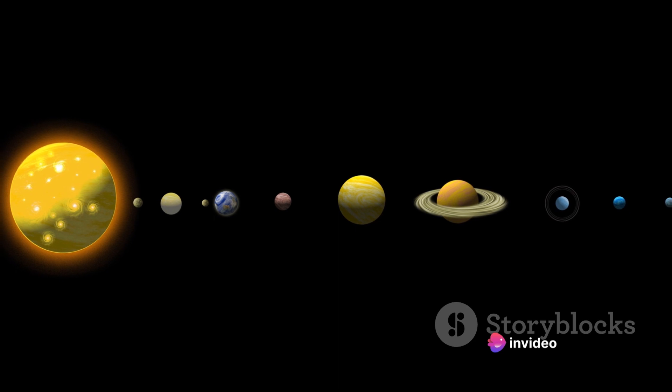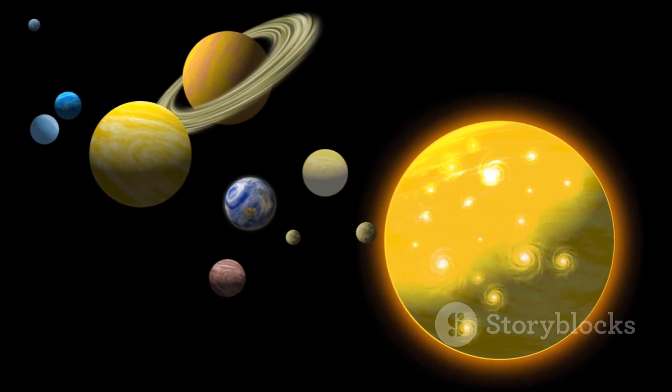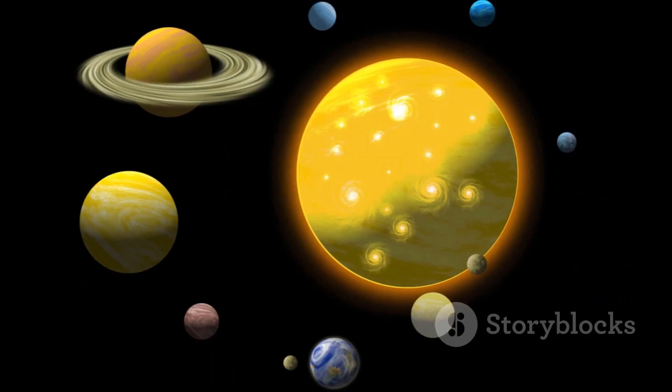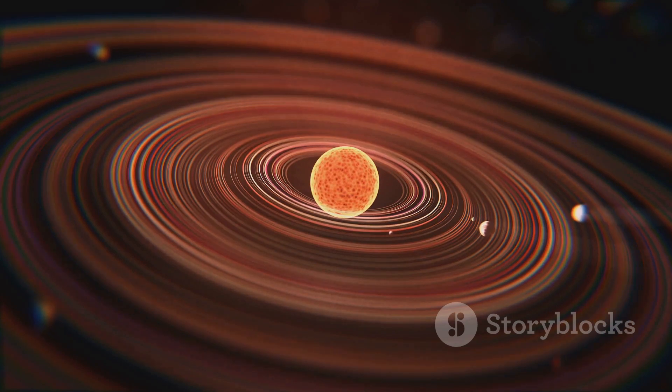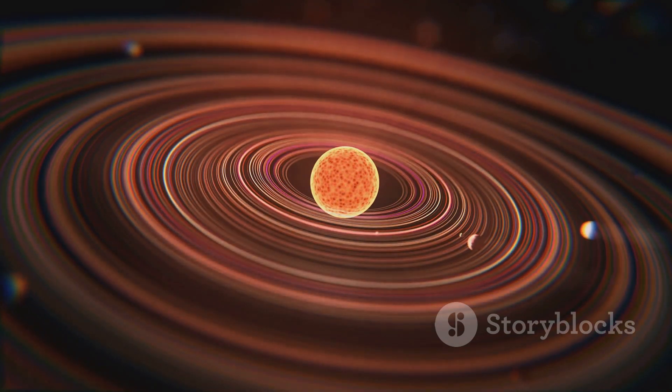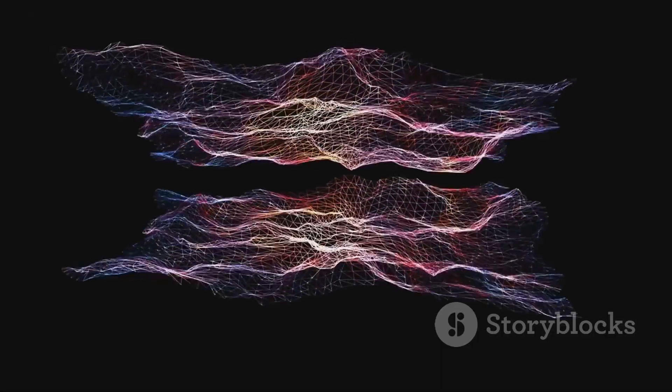Over millions of years, a solar system forms, a harmonious ensemble of planets around a central star. But the cosmic narrative doesn't end there. Each solar system continues to evolve. Planets cool, develop atmospheres, and perhaps under the right conditions, life may even take root. From dust and gas to intricate dances of celestial bodies, the universe continues its ever-evolving narrative.